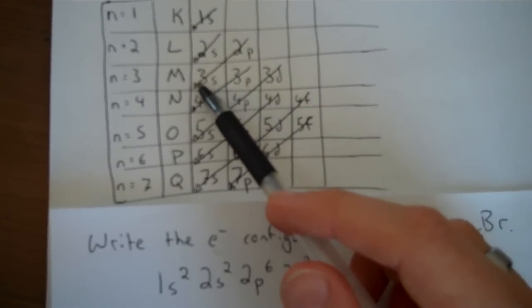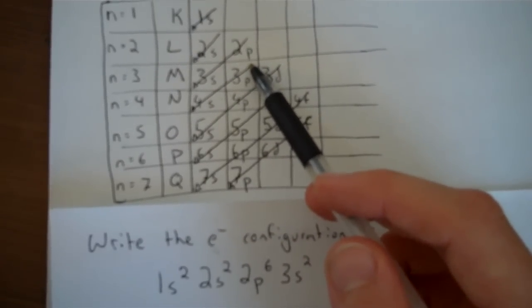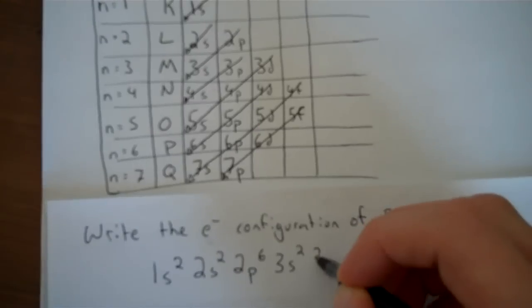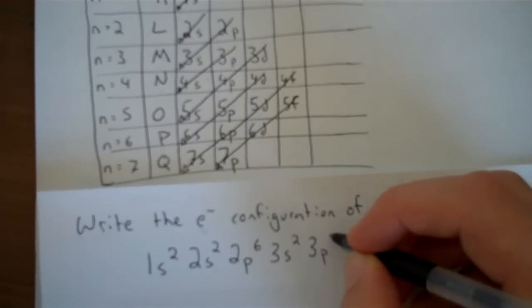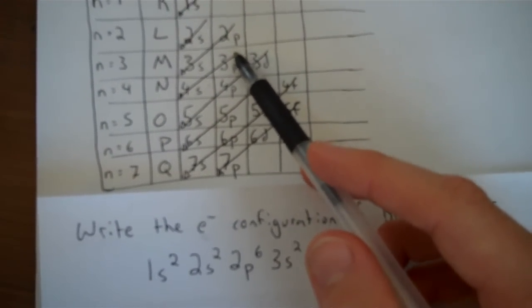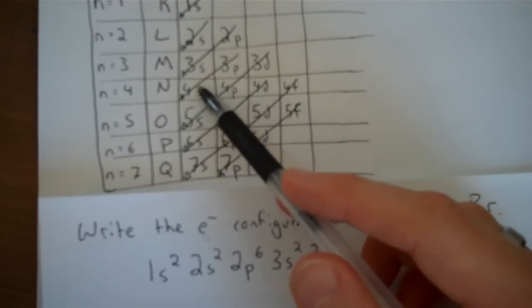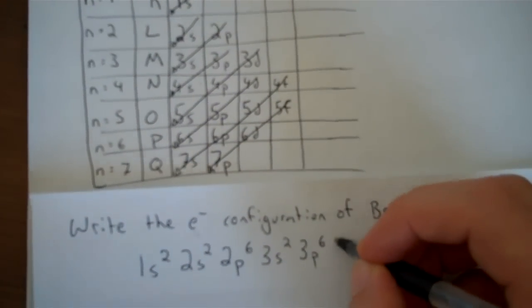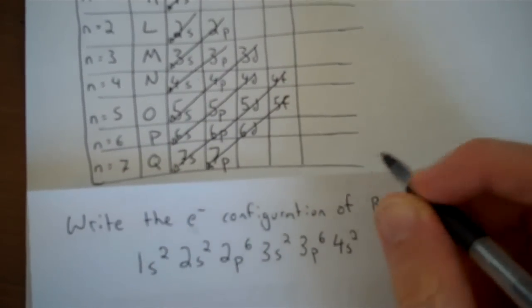After 3S, follow my line, it ends, go to the next one. I'll fill 3P, put a maximum of six in that P subshell. After 3P, follow my line, I'll start filling 4S. 4S can hold two.